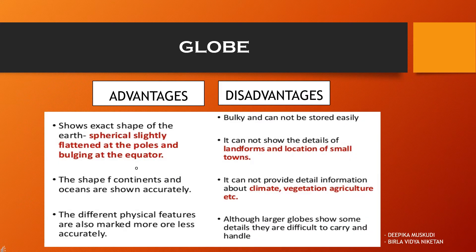Students, like every coin has its two sides, similarly a globe also has some advantages and some disadvantages associated with it. Some advantages of the globe: it shows the exact shape of the earth — spherical, slightly flattened at the poles and bulging at the equator, which is also known as the geoid shape. The shape of continents and oceans are shown accurately. The different physical features are also marked more or less accurately.